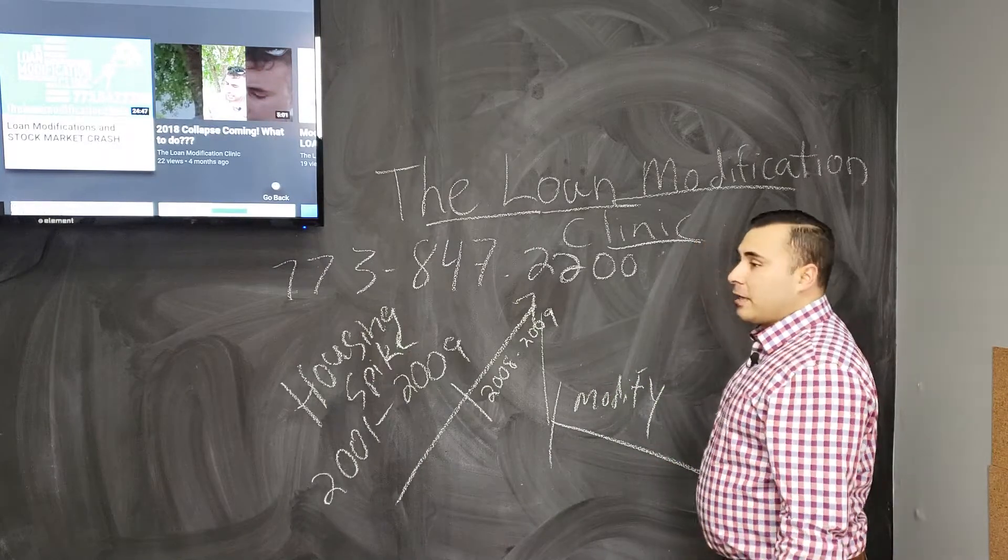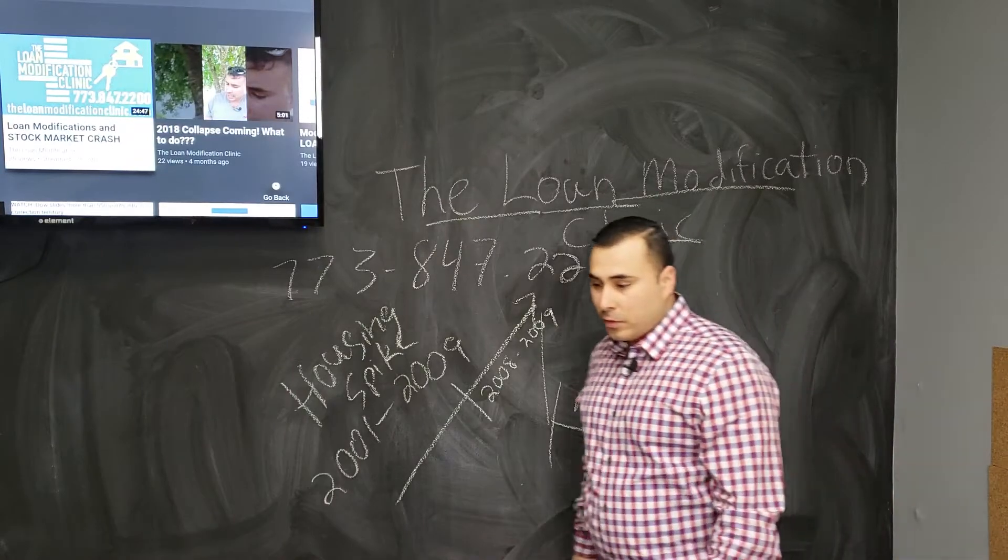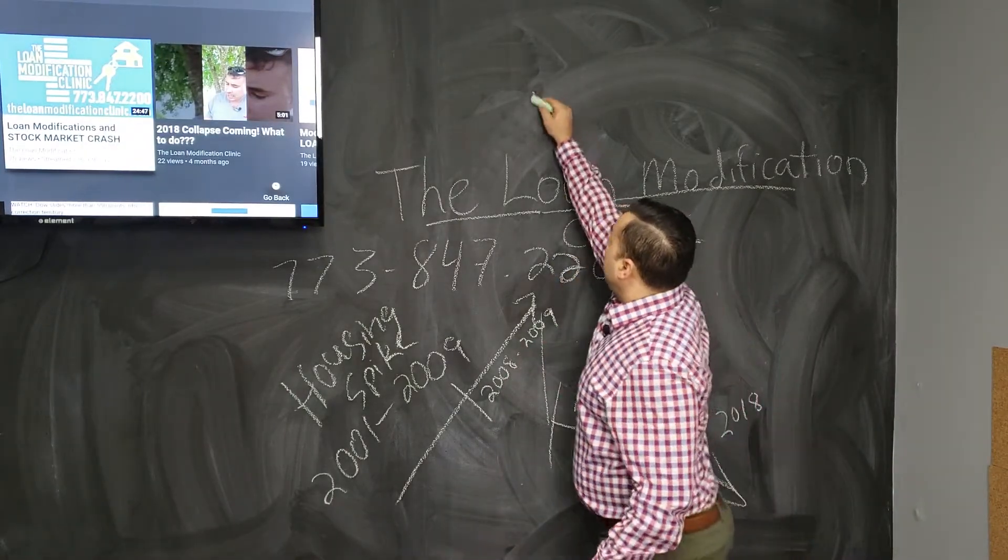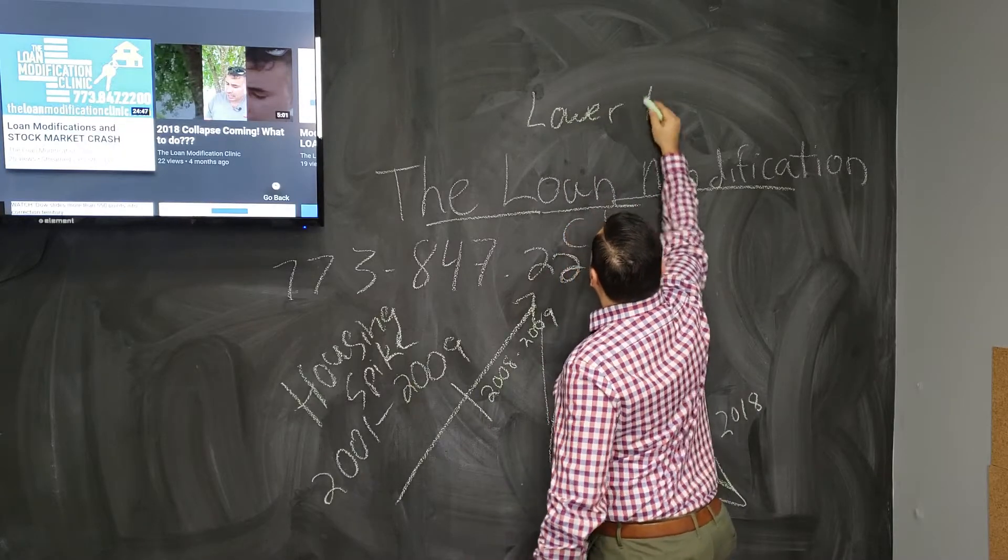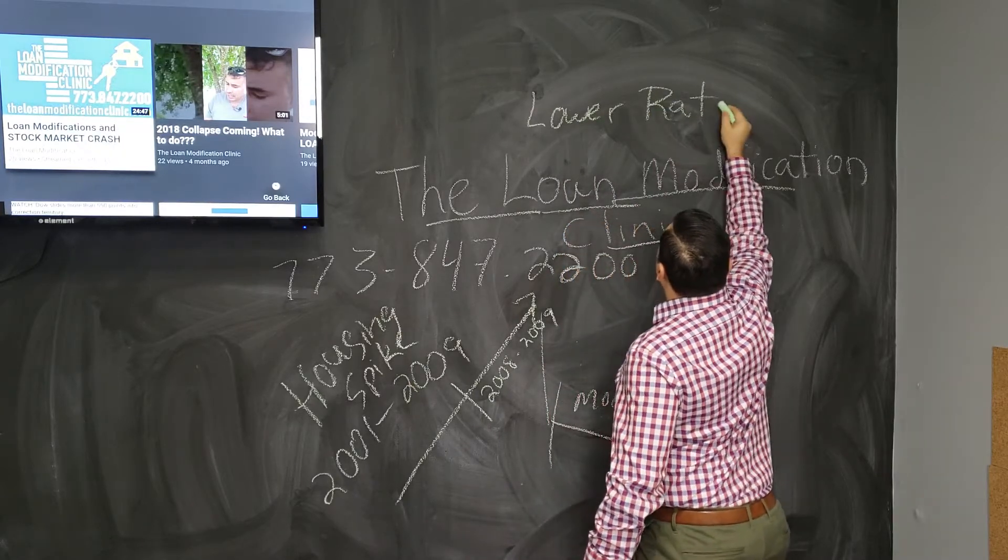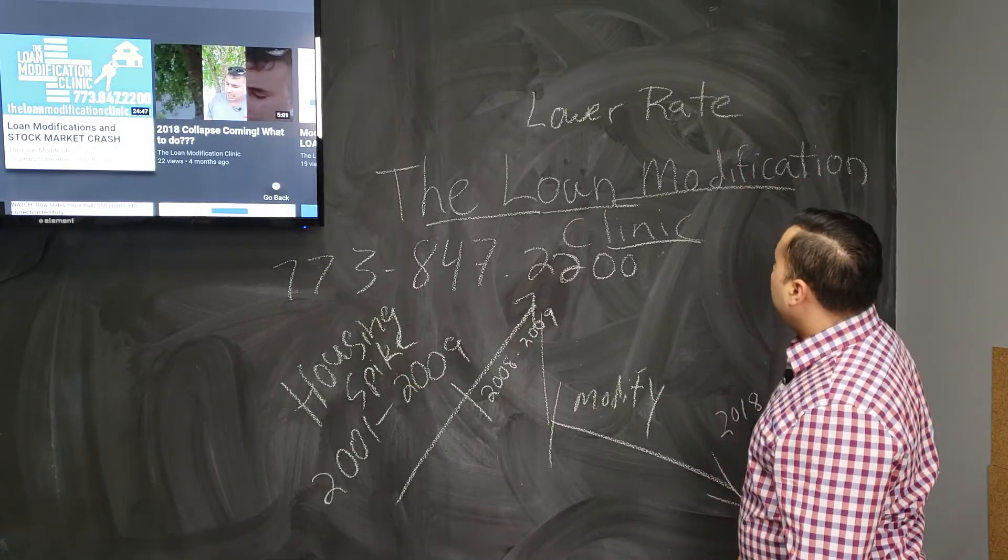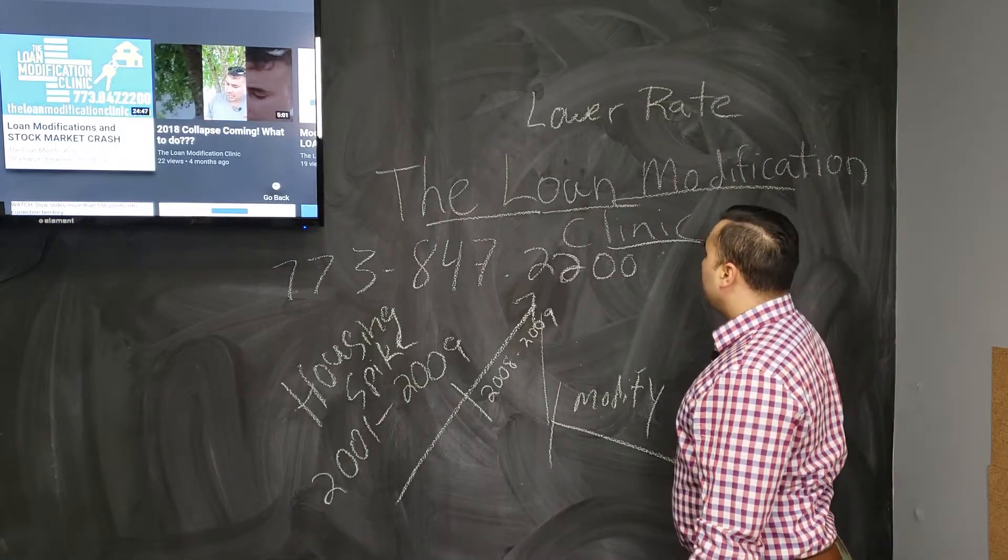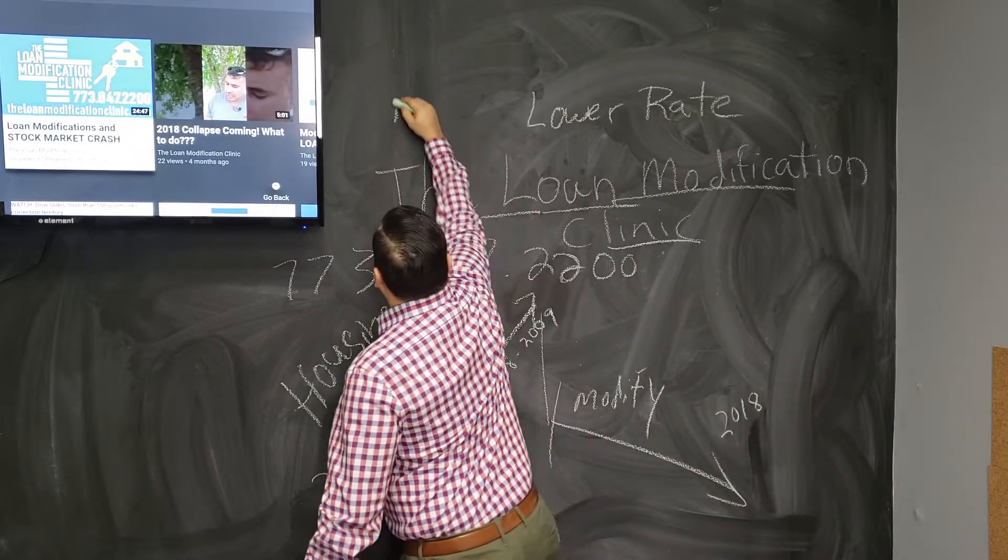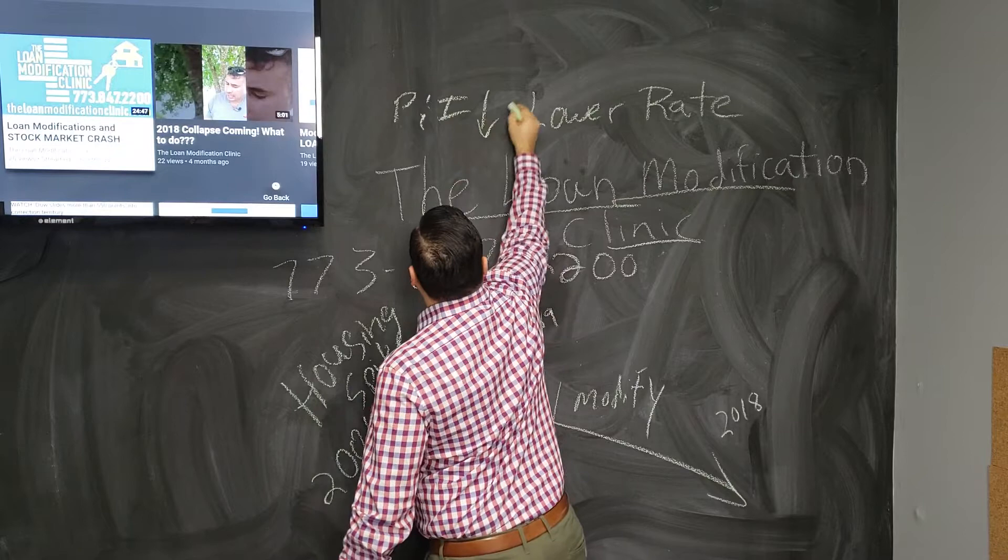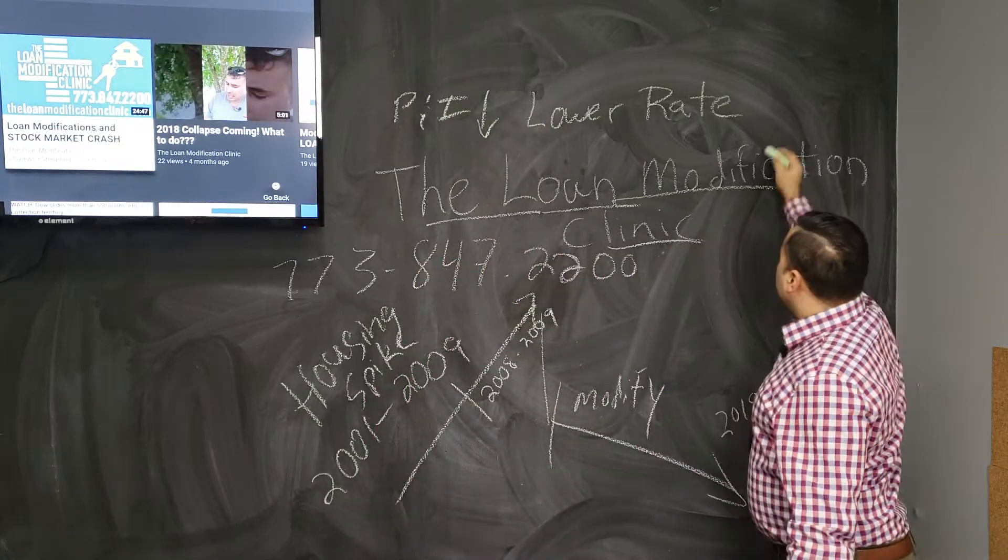Now, the modification, what does it include? Well, what it includes is a lower rate. If you're going to get a lower rate, your payment is going to be lower. What we're talking about is a principal and interest payment lower.